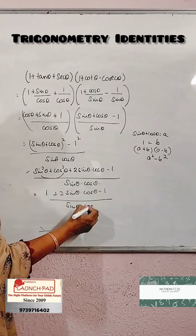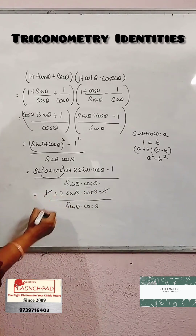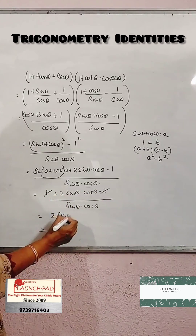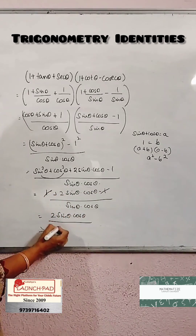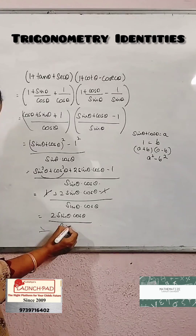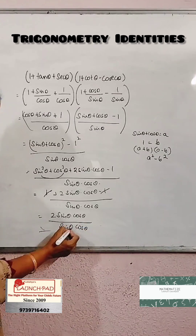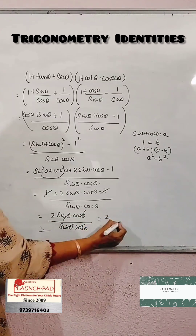The 1 and -1 cancel, leaving 2 sin θ cos θ over sin θ cos θ. Cancelling sin θ and cos θ, the answer is 2.